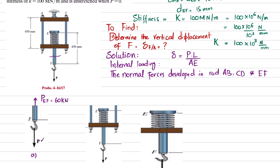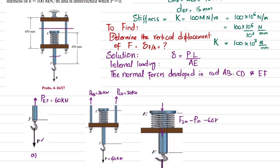To find forces in rods AB and CD, cut the structure at that level. You get P_AB and P_CD, and the downward load P = 60 kilonewtons must be counterbalanced by both rods equally, so each carries 30 kilonewtons. Since the load is applied at that point, the spring force F_spring = −P = −60 kilonewtons (compressive, causing the spring to compress).